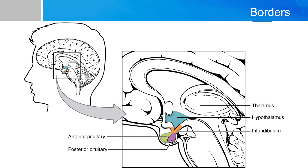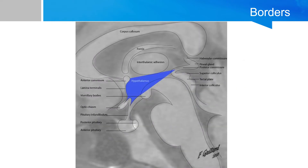On a mid-sagittal view, the borders of the hypothalamus can be drawn by a triangle. If you draw a line between the anterior commissure and the posterior commissure — called the ACPC line — a line between the anterior commissure and the optic chiasm, roughly bordered by the lamina terminalis, and another line between the chiasm and the posterior commissure as the third leg, you have roughly the boundaries of the hypothalamus.